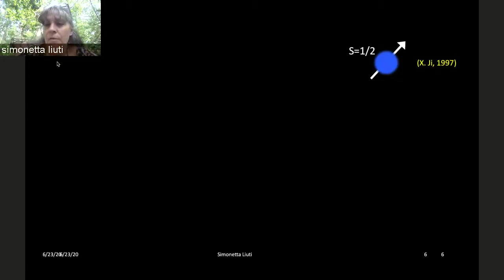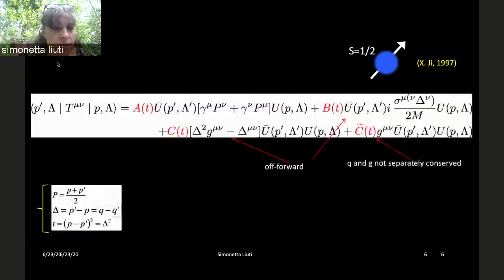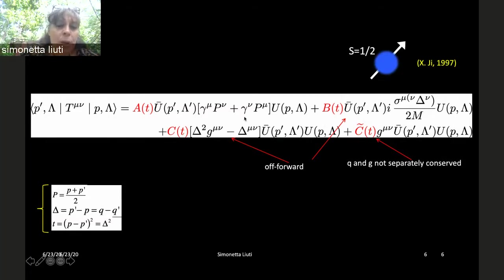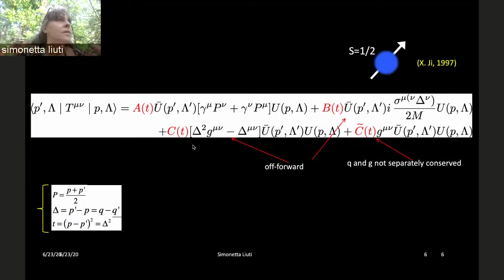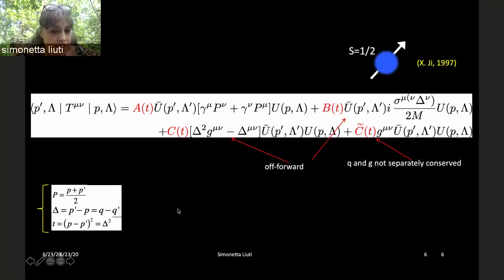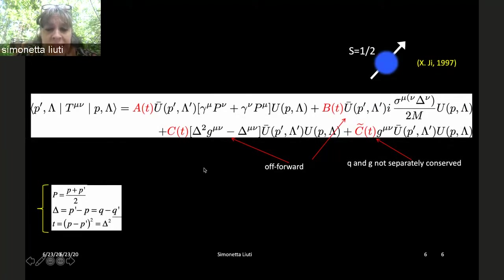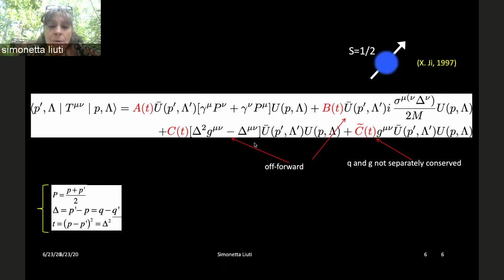Ji asked how the energy momentum tensor looks for a spin-1/2 system when sandwiched between proton states. The result has three form factors A, B, and C. The important step Ji made is that there are form factors — fundamentally three — where B and C require off-forward matrix elements of the proton involving a momentum transfer delta between the initial and final proton. How do we access and calculate them?